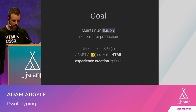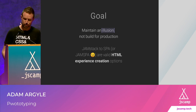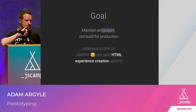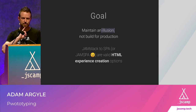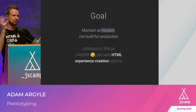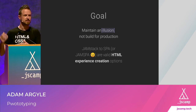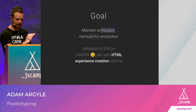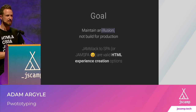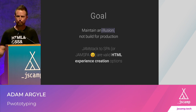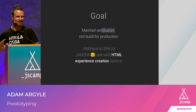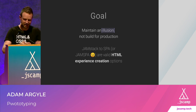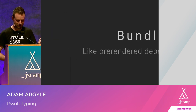You can use Jamstack to SPA or what I call 'Jam Spa' — you can pre-render as much as you can and bring in a framework. Gatsby is kind of Jam SPA. They're all valid experience creation options. It doesn't matter how you pre-render or what framework you're using — the goal is to get as much done ahead of time so that when it hits the browser, it can be instant.